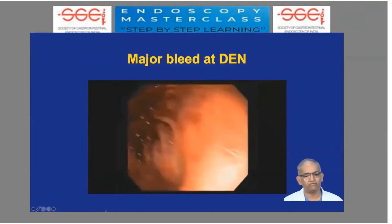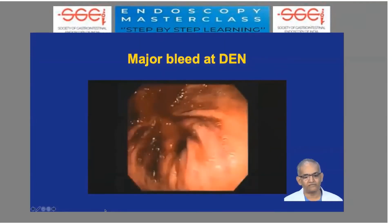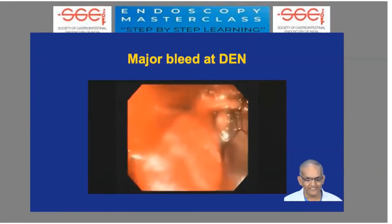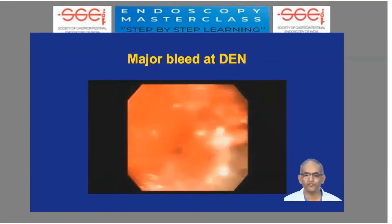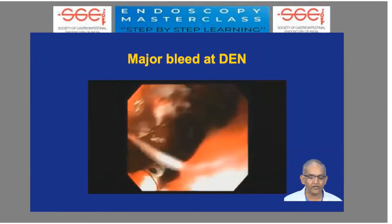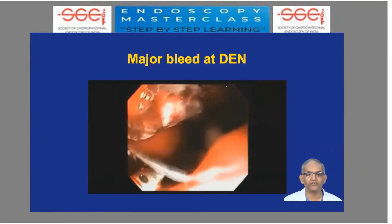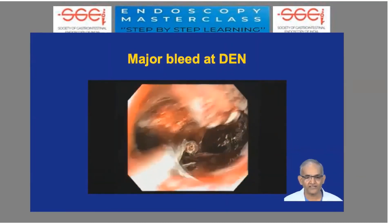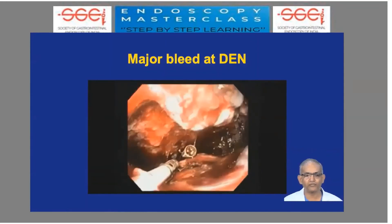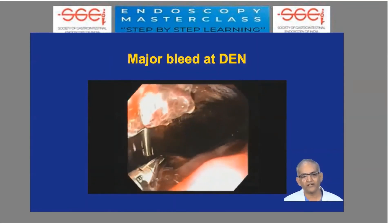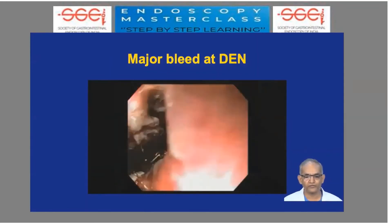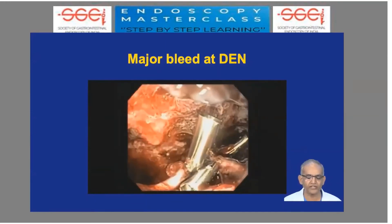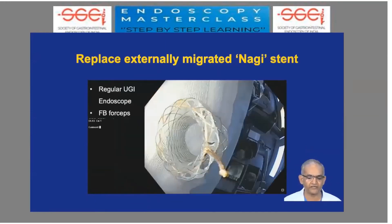This is an example of an arterial bleed visible inside the cavity. Some gastroenterologists with the confidence will go inside and put clips on these blood vessels. Personally, I prefer to ask IR colleagues to bail out from this situation, but it all depends on what resources are available at your center.